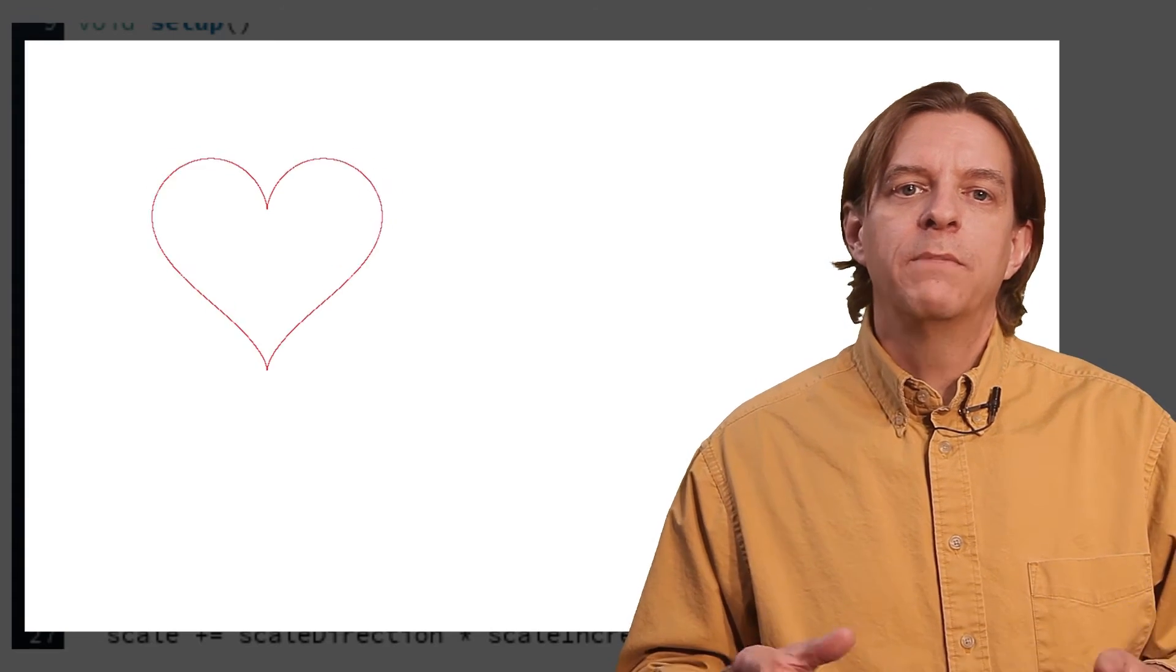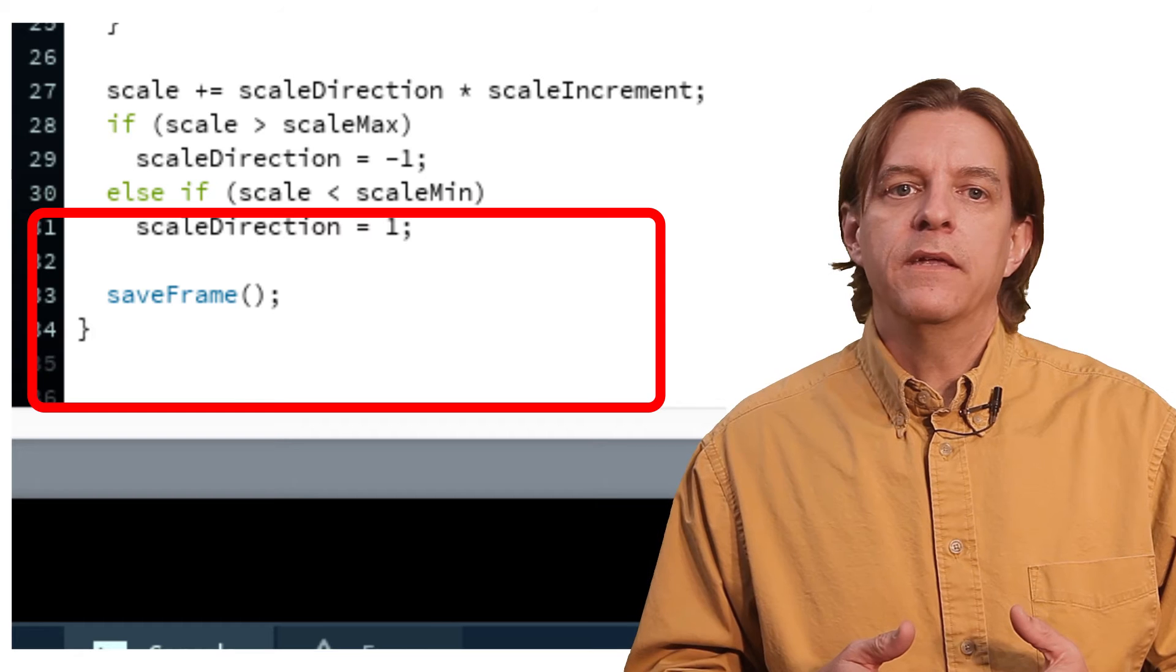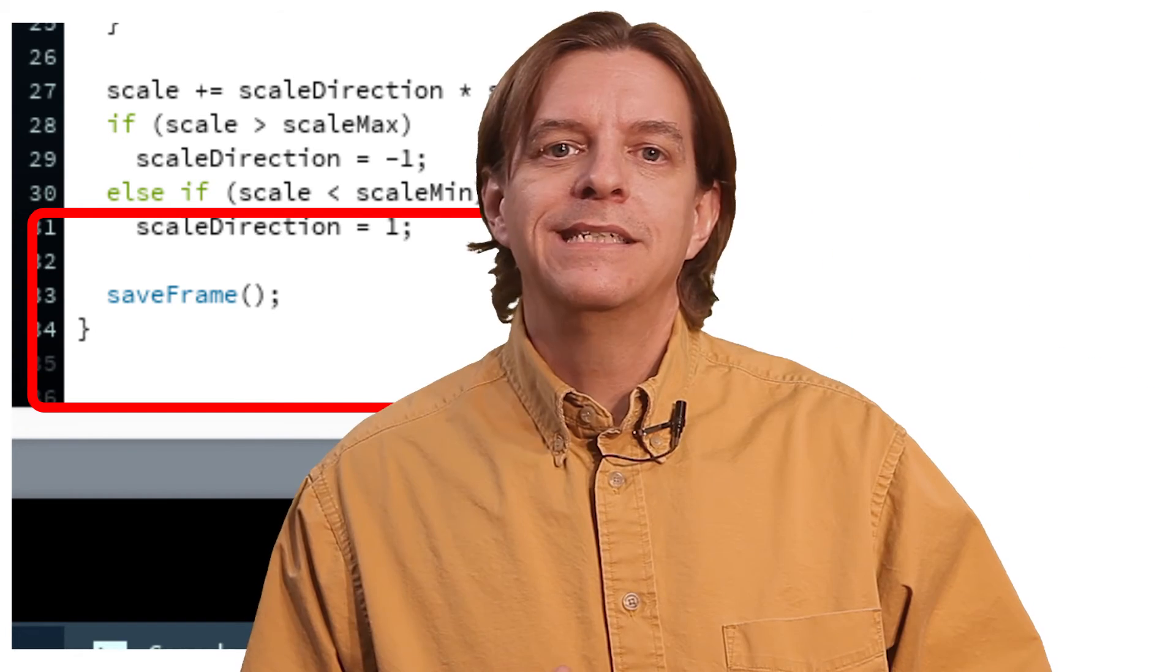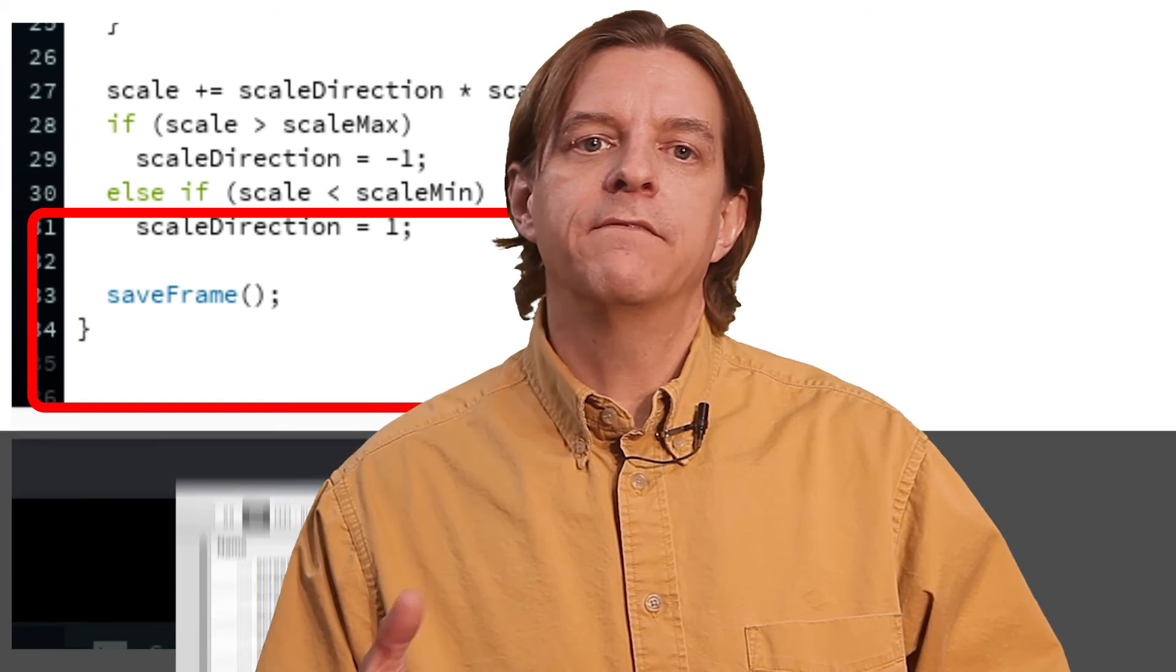This is cool and all, but it's hard to show our special someone. By adding a line to the end of our draw method, we can tell processing to save our drawing to a file. Now let's run this for a little bit, stop it, and go look at where we saved our program.